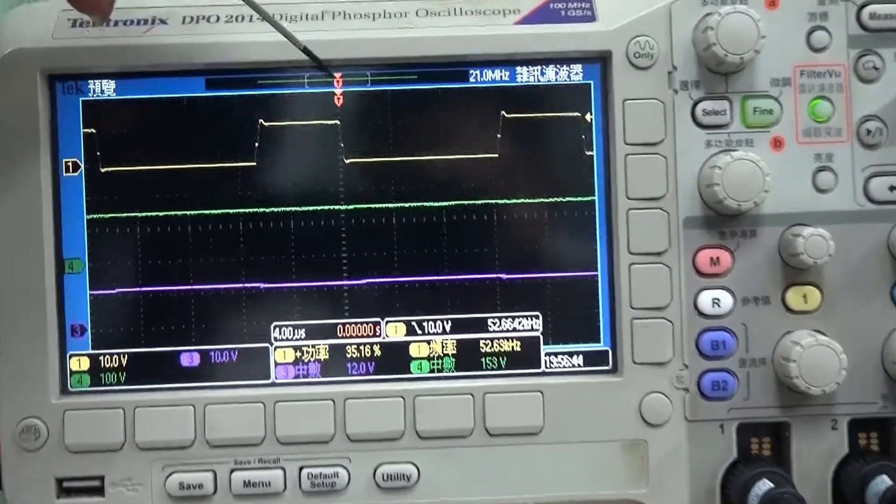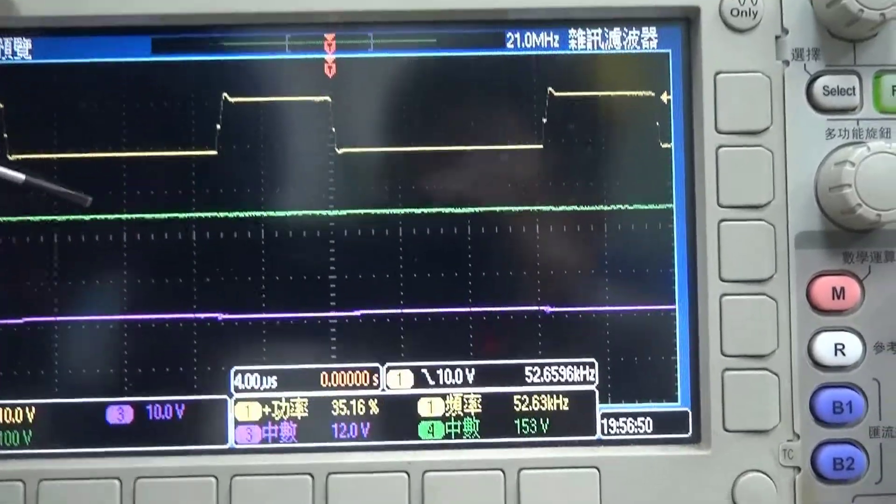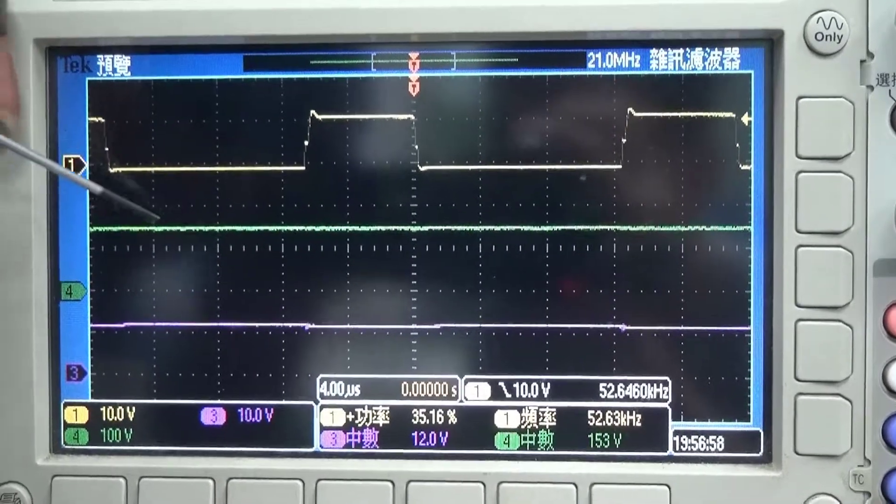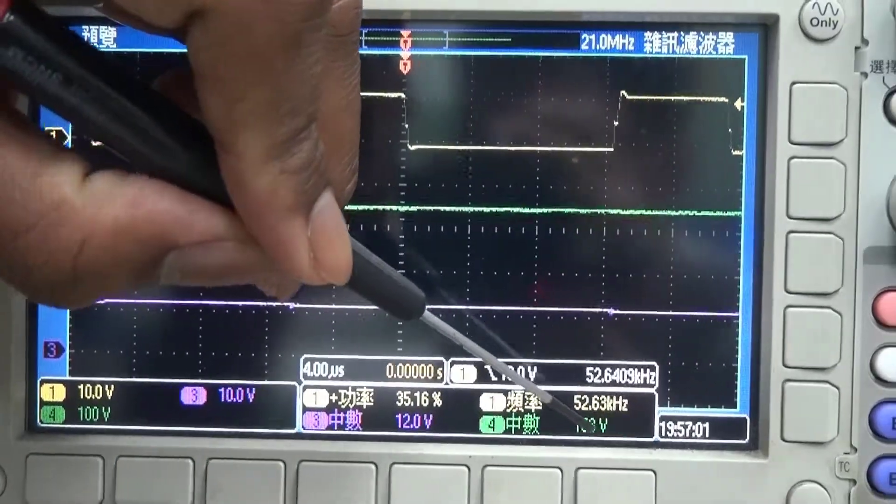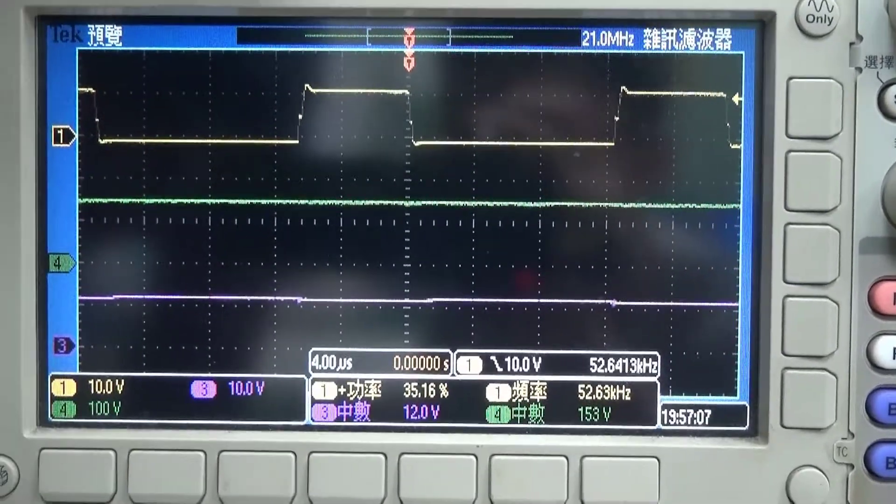Firstly, we can see our VGS waveform right here. Next, we have our input of 156V as we can see by the measurement number 4 right here. And last but not least, we have our 12V output right here.